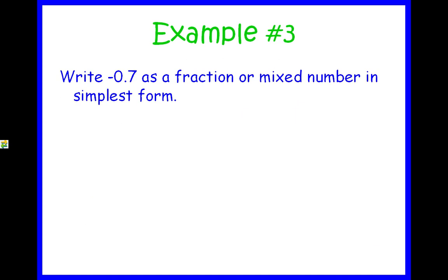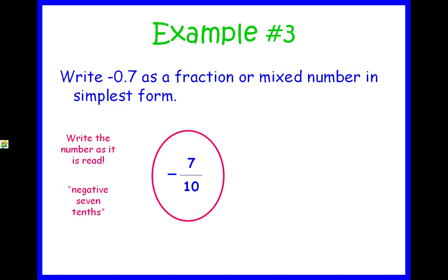Example number three. We're going to write a negative 0.7 as a fraction or mixed number in simplest form. For numbers like this, whenever we're changing a decimal to a fraction, it's really easy. All you have to do is write it as it is read. Just read the decimal. The proper way to say it is negative seven-tenths, because this is in the tenth spot. So I would write that as a negative seven-tenths, and that's your fraction. That's all there is to changing a decimal to a fraction.